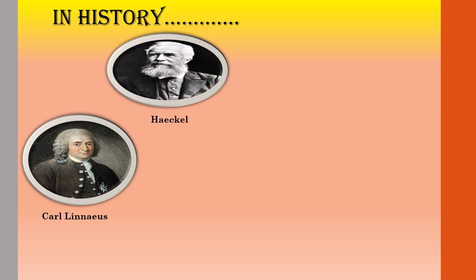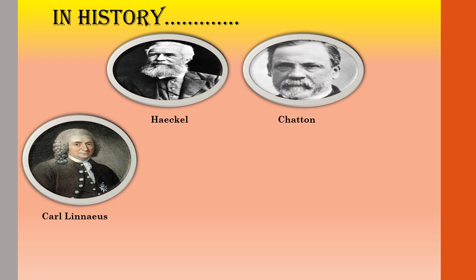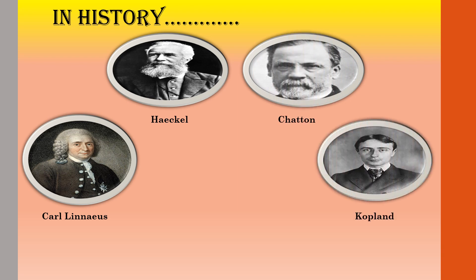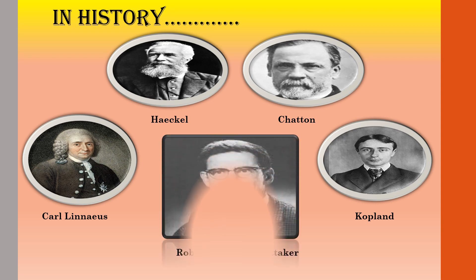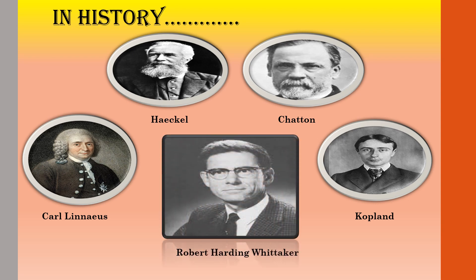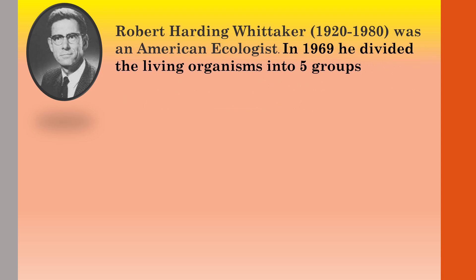In the past, many biologists like Carolus Linnaeus, Haeckel, Chatton, and Copeland divided the living world into different groups. But today, we consider Whitaker's classification. Robert Harding Whitaker was an American ecologist and in the year 1969, he divided the living organisms into five groups.